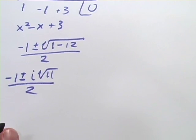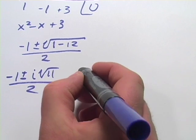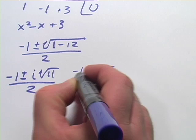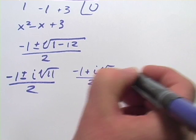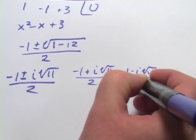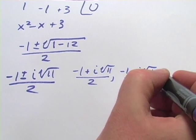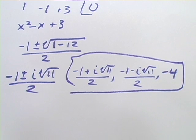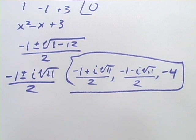So we can write the roots now as negative 1 plus i times the square root of 11 over 2, negative 1 minus i times the square root of 11 over 2, and the one we were given in the first place, negative 4. So those are all the zeros of that function. Let's try one more.